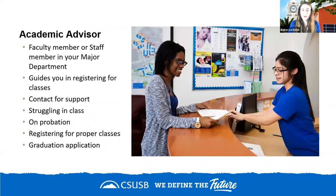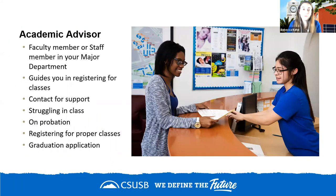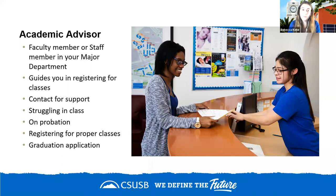Now let's talk about academic advisors — who they are and what they do. For undergraduate studies, an academic advisor is either a faculty member within the major or a professional staff member who doesn't necessarily teach classes but is trained to understand the academic structure of the program. Their focus is within the major department.